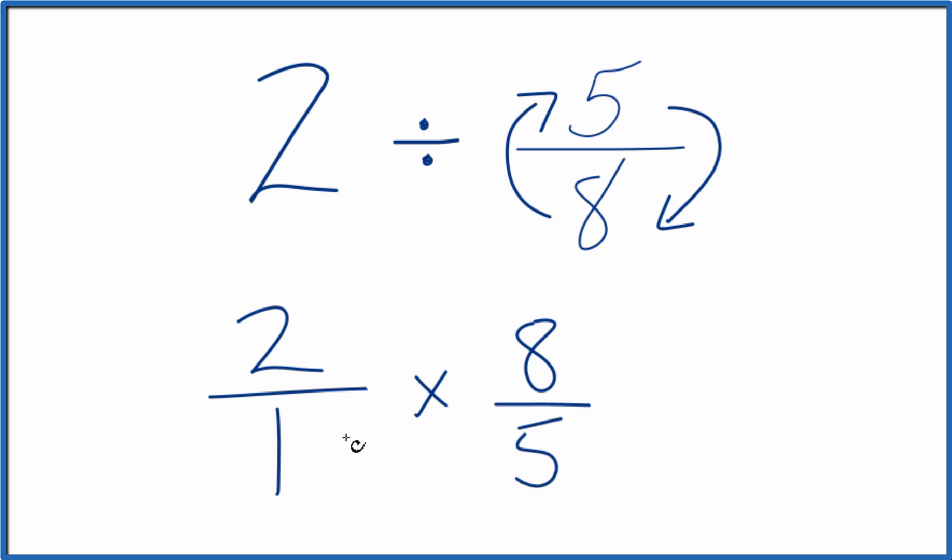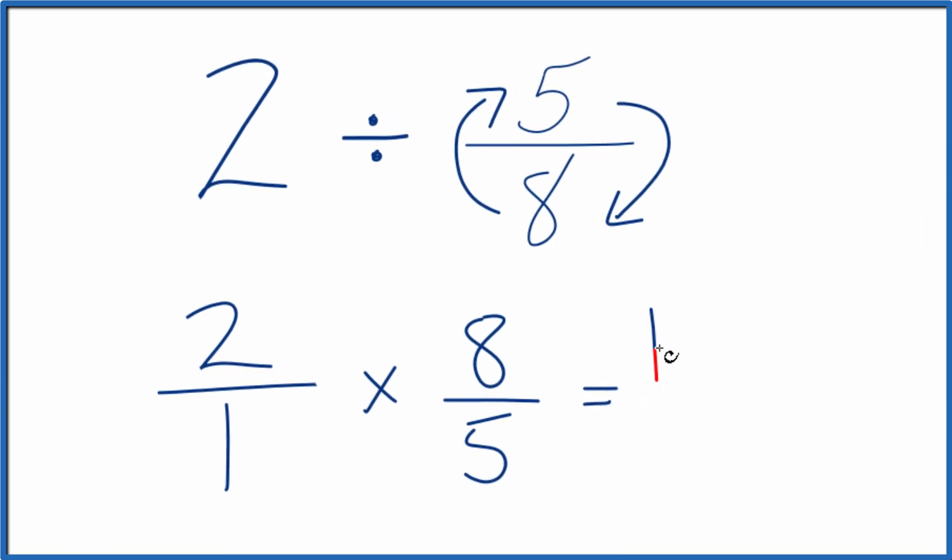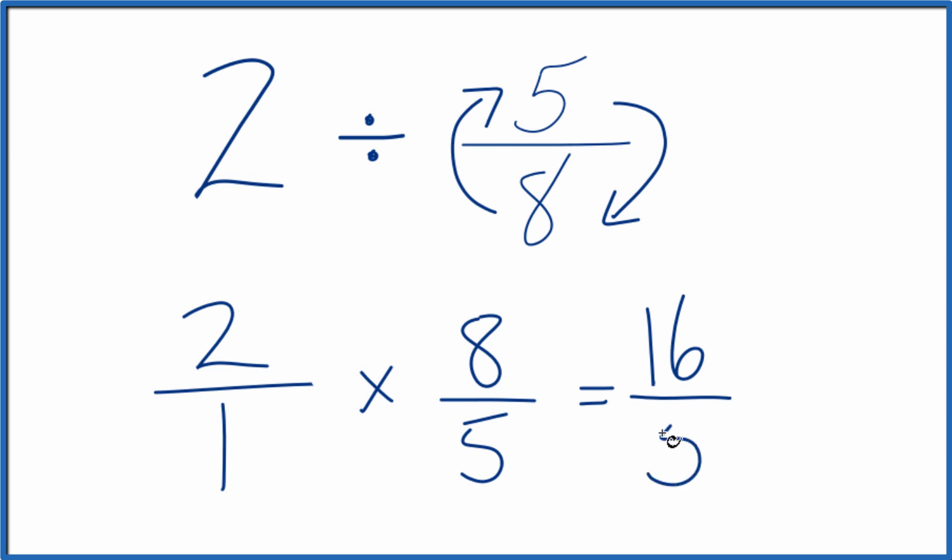Now when we multiply fractions, we multiply the numerators and then the denominators. 2 times 8, that's 16. 1 times 5, that's 5.